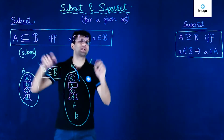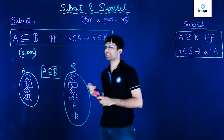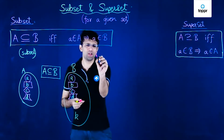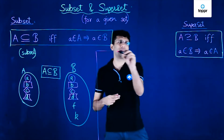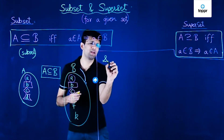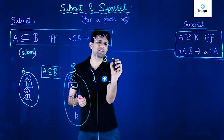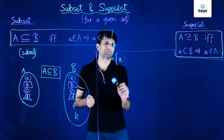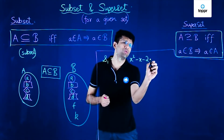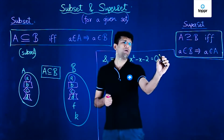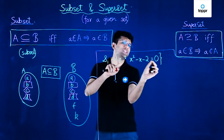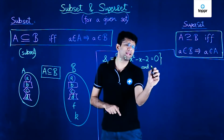We have now seen what we mean by subset and superset. Before looking at proper subsets, let us see a numerical example. We have two sets. The first set S1 is defined as containing all elements X such that X² − X − 2 = 0, where X is an element of the real numbers.